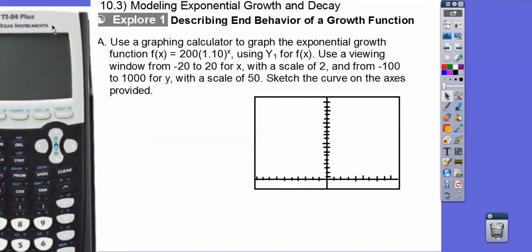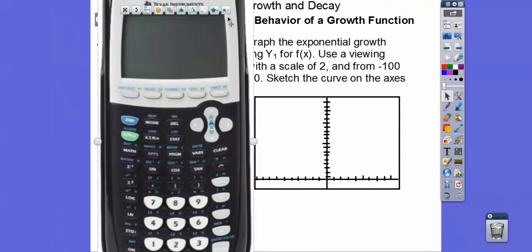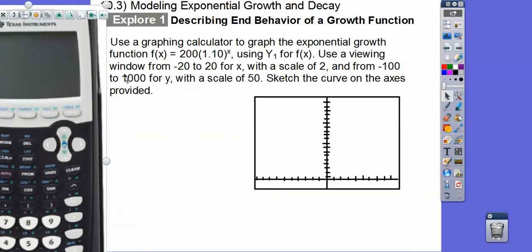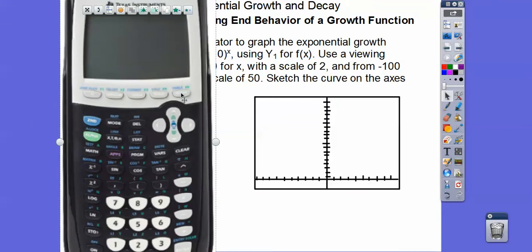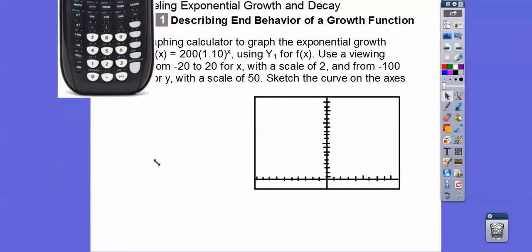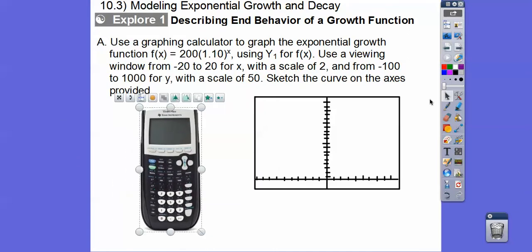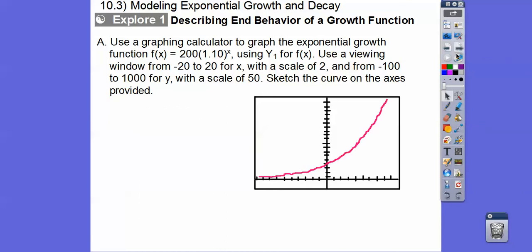And then for the viewing window, it says to go from the X is from negative 20 to 20 with a scale of two. So the viewing window is right there. That's the window button. So when you click that, it'll ask you to punch in negative 20 to 20 in a scale of two. And then same with the Y is negative 100 to 1000 with a scale of Y and then sketch a curve of the axes provided. So right here is a graph button. This little button right here is our graph button right there. So when we do that and we hit the graph button, that top right hand button, it's going to look something like this.